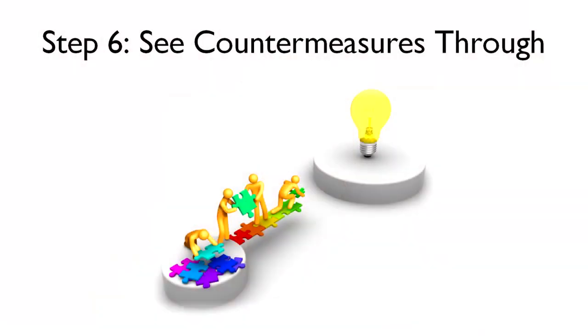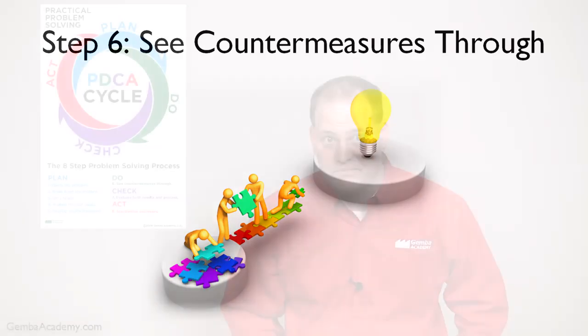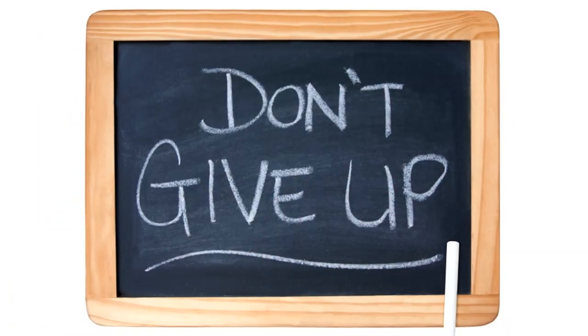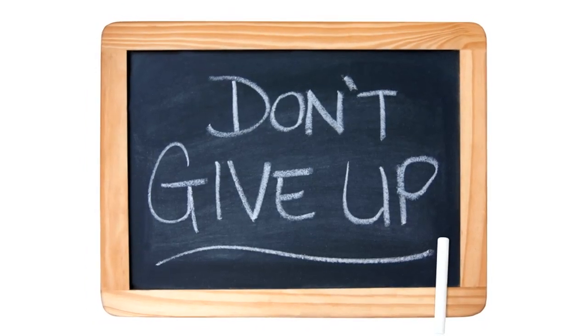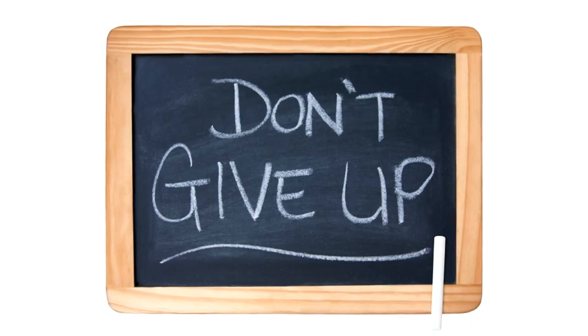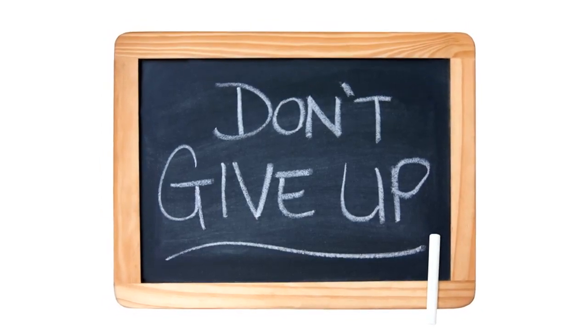Step six is seeing the countermeasures through as we implement our countermeasures quickly as a team. To accomplish this, it's important to seek the help and most importantly, the ideas of many people. You'll also want to communicate the status regularly while turning the PDCA cycle again and again. And perhaps the best advice we can offer with this step is to never give up. You'll no doubt hit obstacles and challenges, but your willingness to persevere and battle through these situations may very well mean the difference between success and failure.